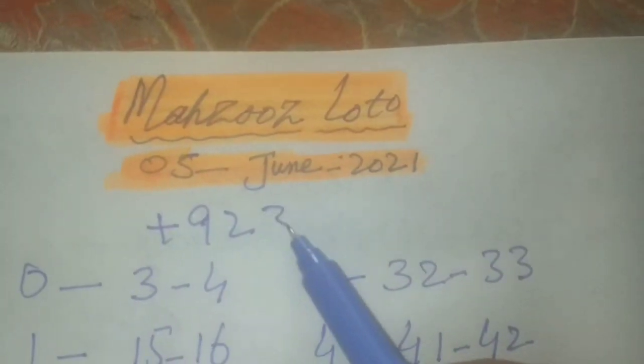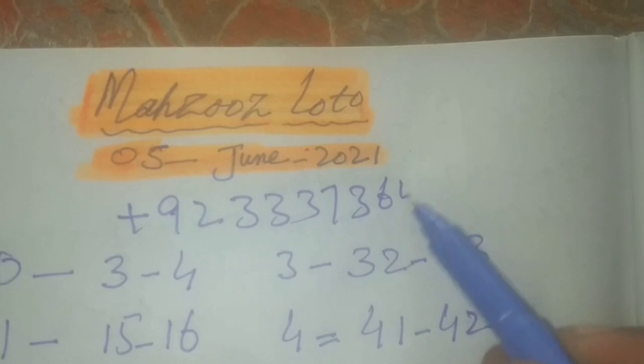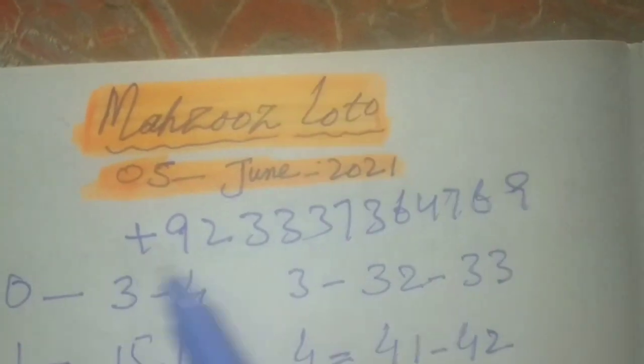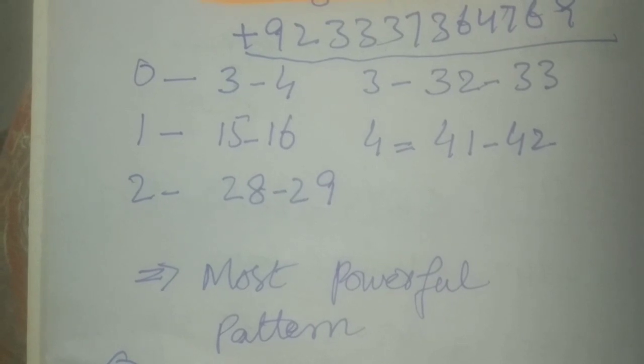This is my WhatsApp number: 333-7364-769. I have powerful pairs for this draw, so in the last, good luck and goodbye.